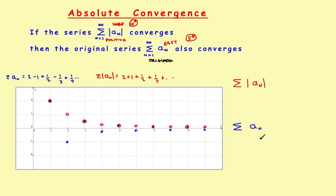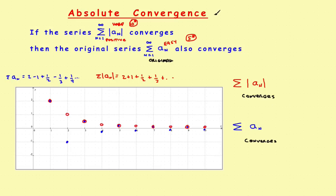Here are some possibilities you might run across. The Absolute Convergence Theorem says: if the absolute value series converges, then you're guaranteed that the original series also converges. So if both the original series and the absolute value series converge, that's called absolute convergence.